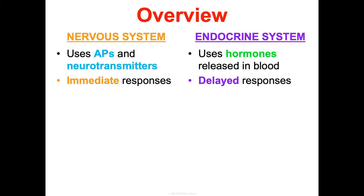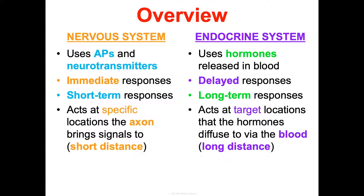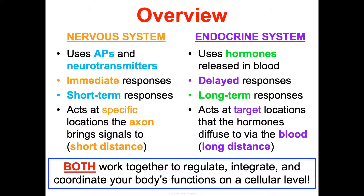The nervous system traditionally causes immediate, short-term responses, whereas the endocrine system has more delayed, long-term responses. The nervous system acts at specific locations where the axon delivers a signal — typically shorter distances — whereas the endocrine system acts at target locations that hormones diffuse to via the blood, traveling long distances. Both work together to regulate, integrate, and coordinate your body's functions at a cellular level.